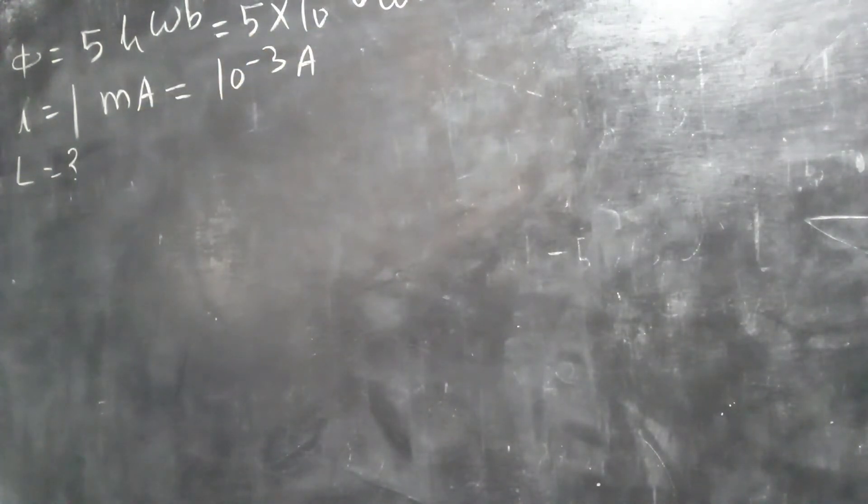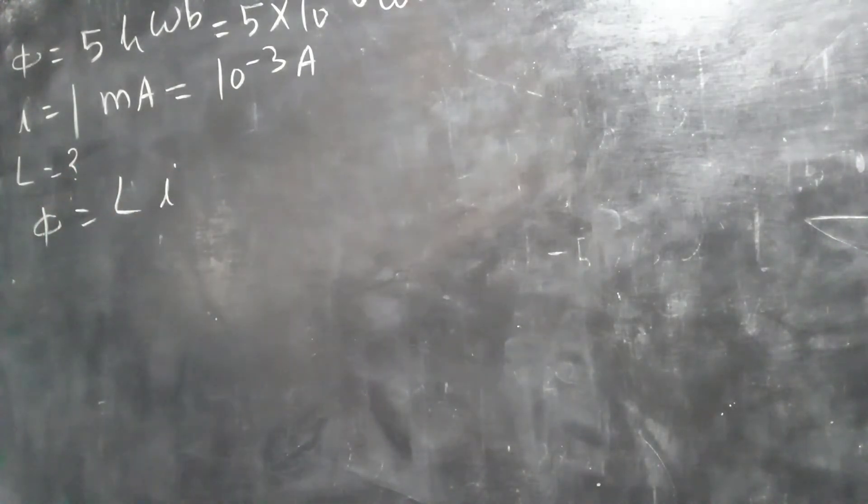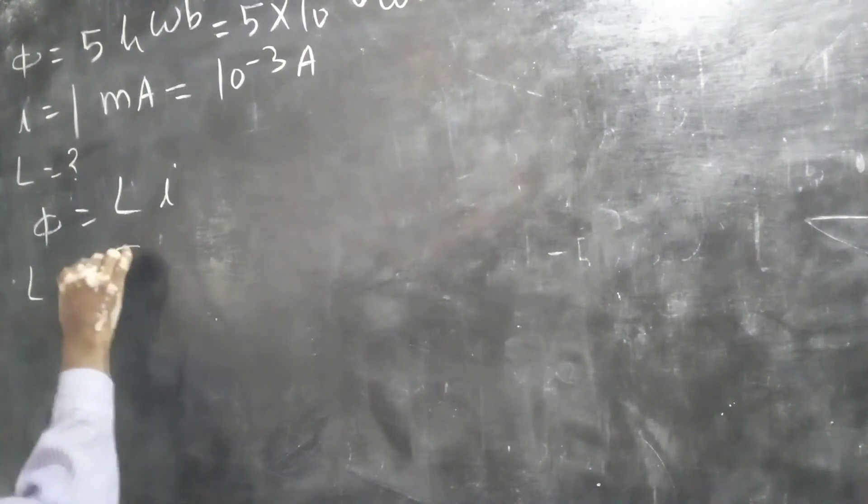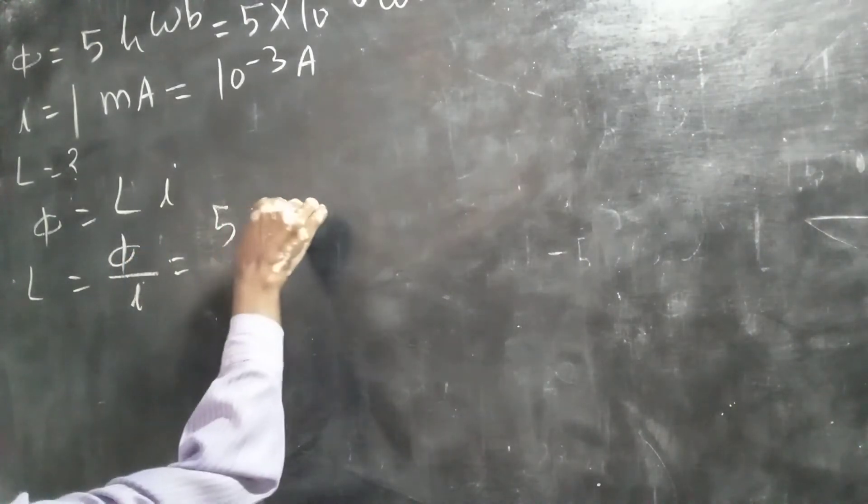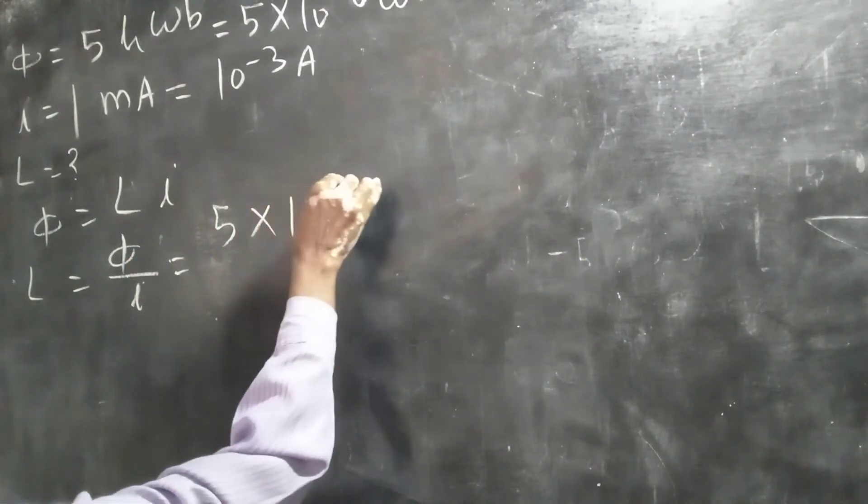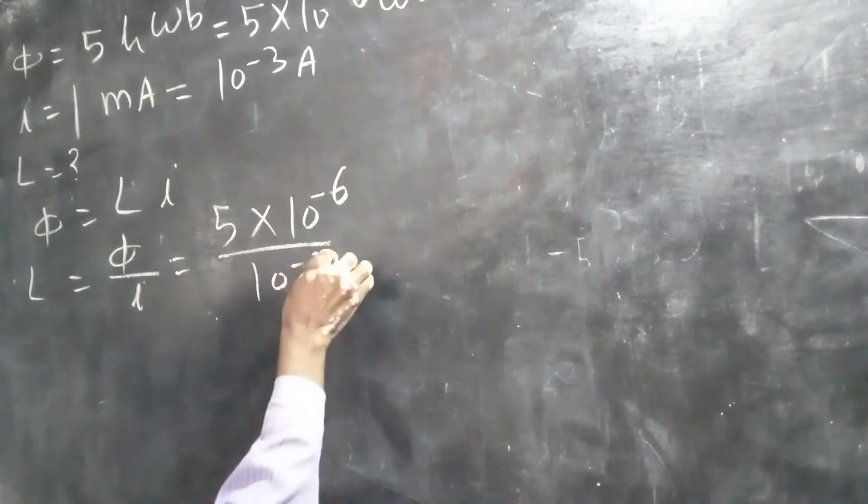You have to find L. So phi is equal to L into I, therefore L is equal to phi upon I. Write the values: 5 into 10 to the power minus 6, and I is 10 to the power minus 3.